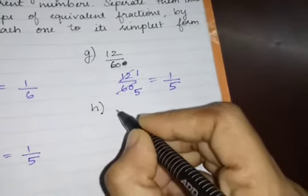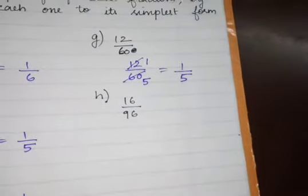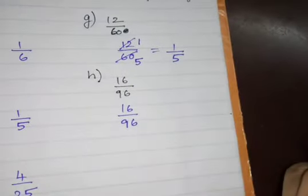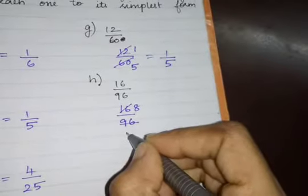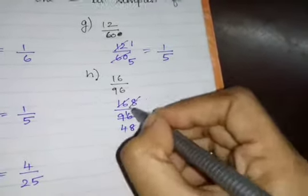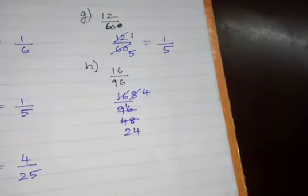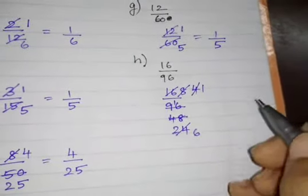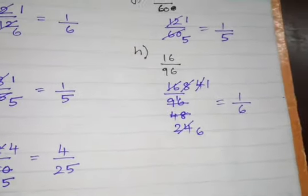H is 16 by 96. In the 2 times table: 2 eights are 16. Continuing to divide: 4 ones are 4, 4 sixes are 24. So 1 by 6 is the simplest form of 16 by 96.